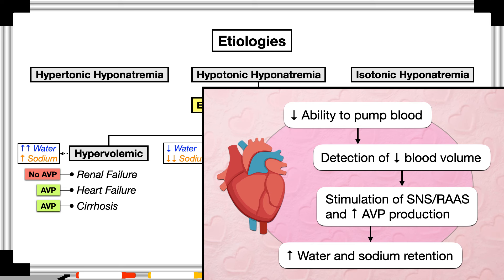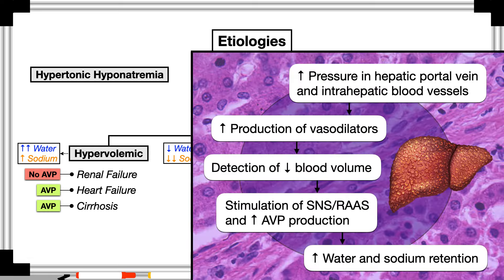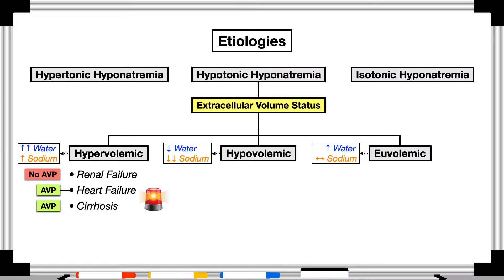In heart failure, the decreased ability of the heart to pump blood leads to detection of low blood volume by receptors throughout the body. Those receptors stimulate the sympathetic nervous system, the renin-angiotensin-aldosterone system, and arginine vasopressin production, coordinating a response to retain more water and sodium. With cirrhosis, scarring of the liver tissue leads to higher pressure in the hepatic portal vein and intrahepatic blood vessels, triggering vasodilator production that lowers blood pressure systemically. In late stages, those same receptors are activated, leading to sodium and water retention. In both instances, the body holds onto water and sodium even if intake is normal or excessive.